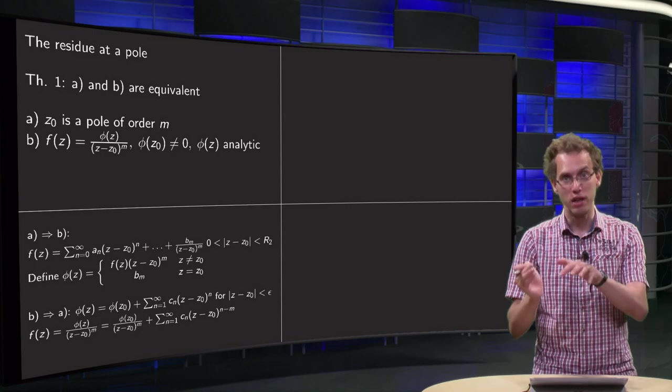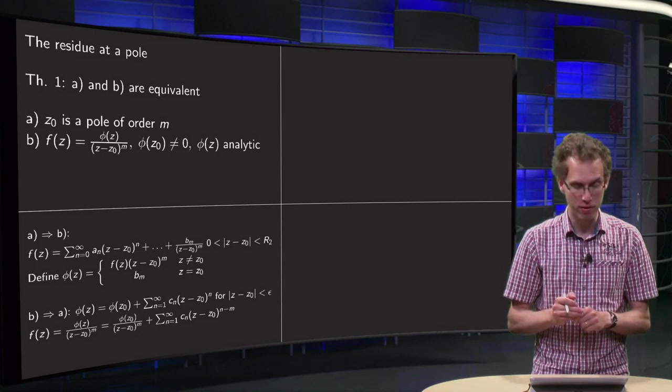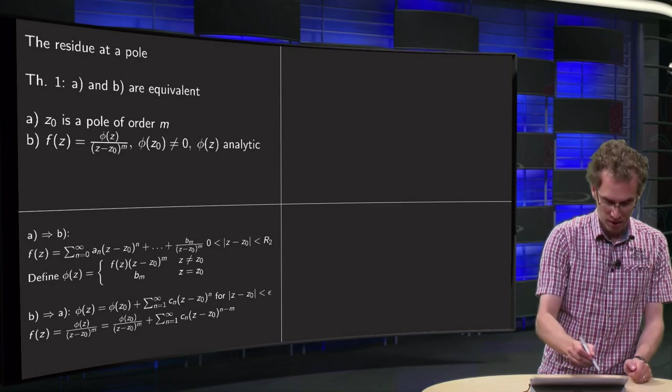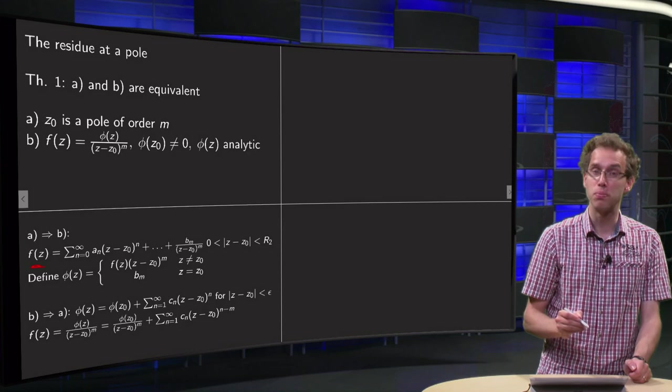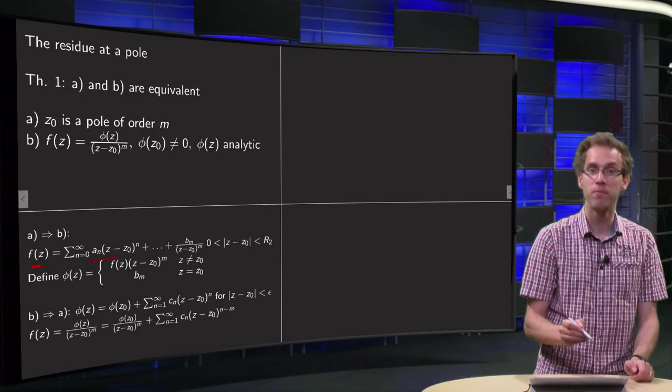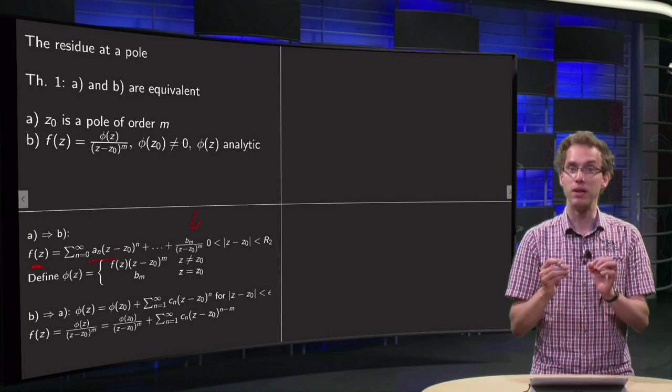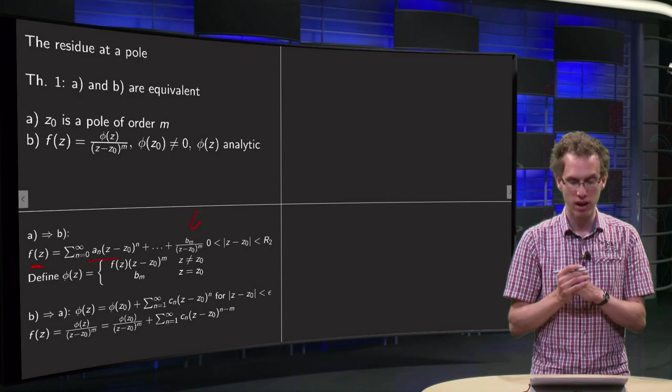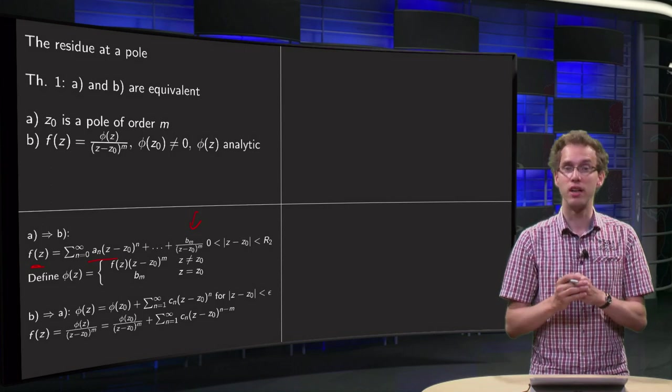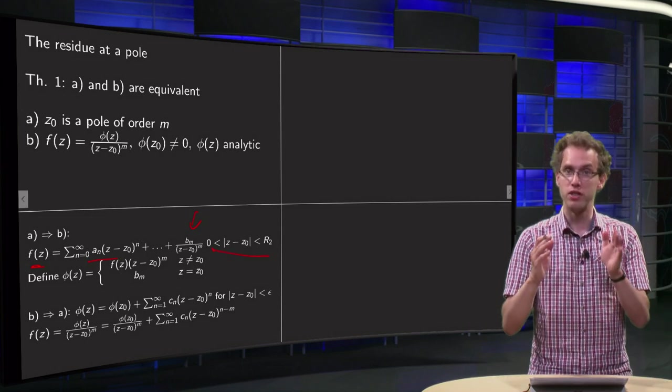Suppose A is true, let's show that B is true. Given that z0 is a pole of order m of f(z), that means f(z) can be expanded in the Laurent series with some analytic part and a principal part which ends at bm/(z-z0)^m, which is an expansion just between 0 and R2.